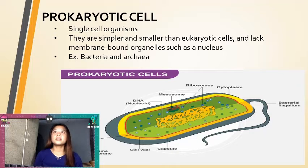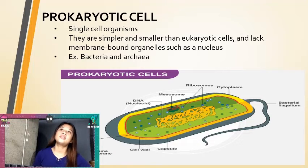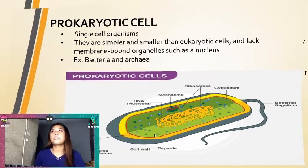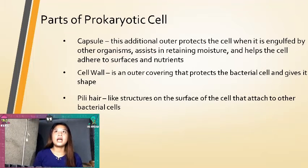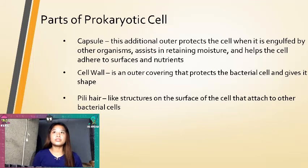The prokaryotic cell is a single-celled organism. They are simpler and smaller than eukaryotic cells and lack membrane-bound organelles such as a nucleus. An example is bacteria. Parts of a prokaryotic cell include: the capsule, an additional outer layer that protects the cell when engulfed by other organisms, assists in retaining moisture, and helps attach to surfaces and nutrients. The cell wall is an outer covering that protects the bacterial cell and gives it shape. Pili are hair-like structures on the surface of the cell that attach to other bacterial cells.